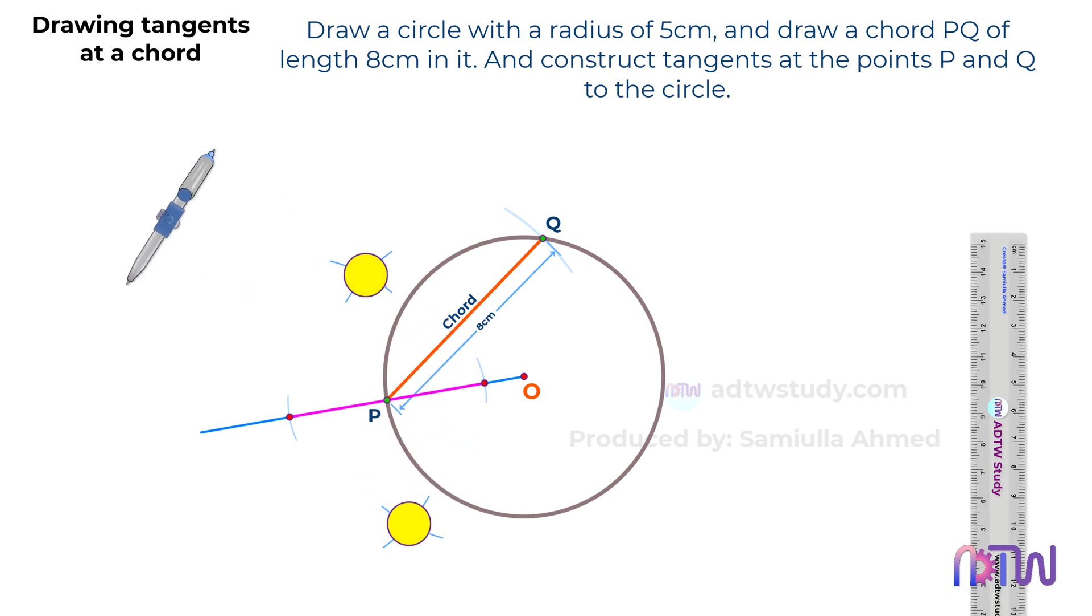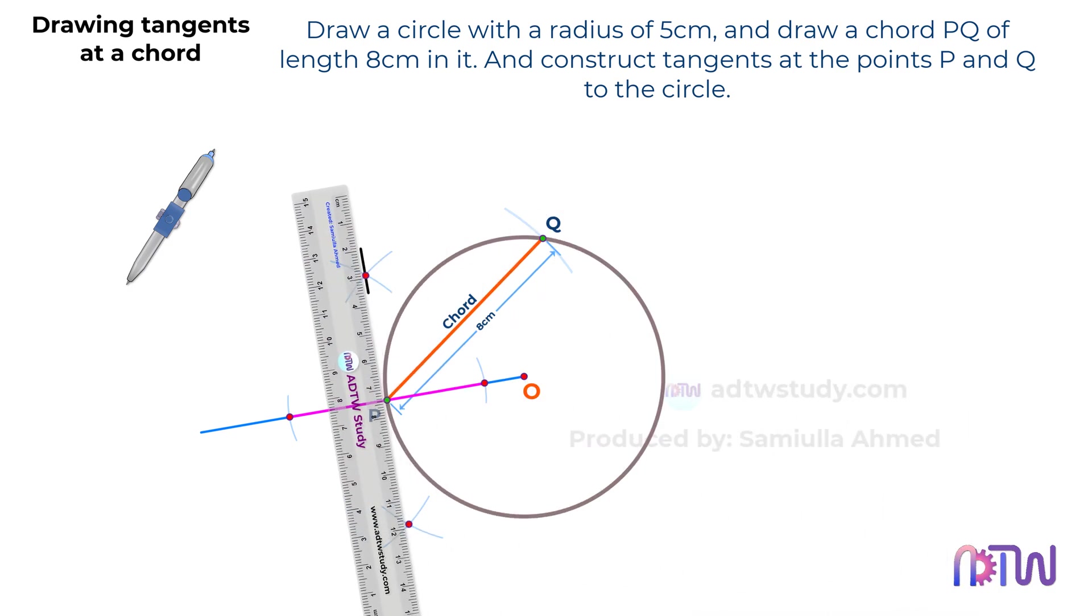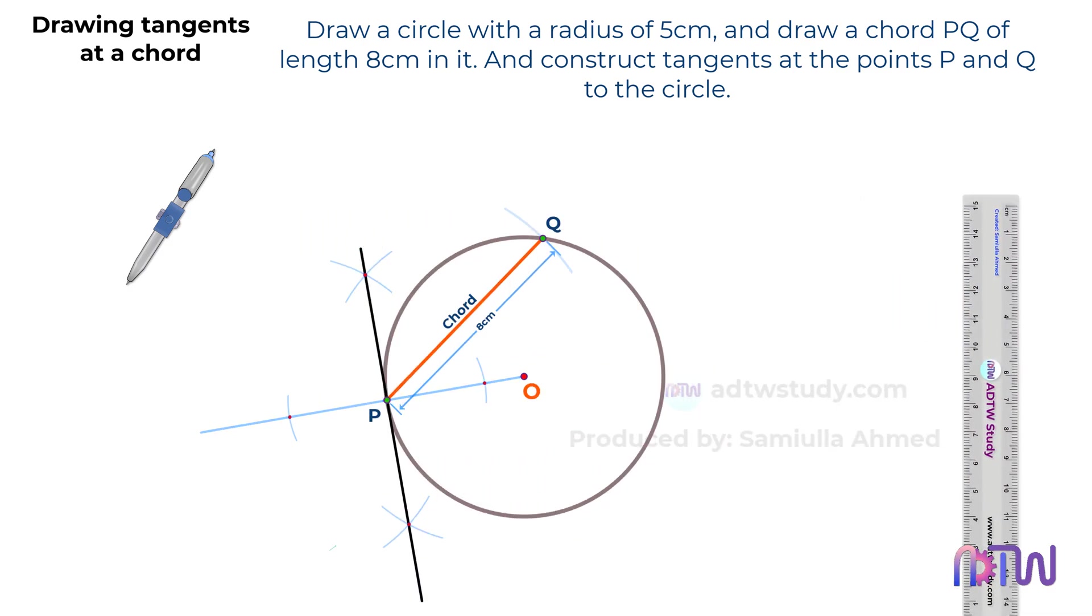Finally, connect the points where these arcs intersect with a straight line. This line will serve as a tangent at point P of the chord.